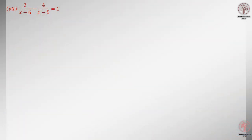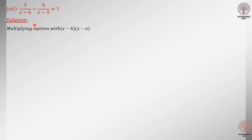This is the question: 3 divided by (x minus 6) minus 4 divided by (x minus 5), equal to 1. This is the type of question you have already done in exercise 1.1 — in question number 1, 2, and 6. There is another method we applied there: multiplying denominator with denominator, the way you did in lower grades. But here, there is another method to solve these types of questions.